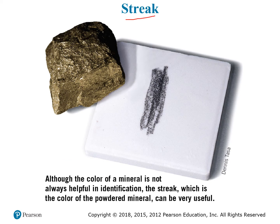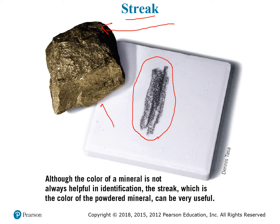Here's a streak example: pyrite, or fool's gold. It looks like gold, but if you scratch it along the streak plate you get a gray streak, whereas real gold won't leave a gray streak. That's how you tell the difference between pyrite and gold — and gold is also much heavier than pyrite, which is an easier indicator.